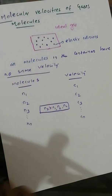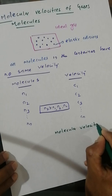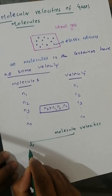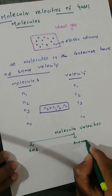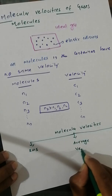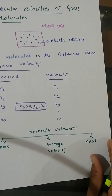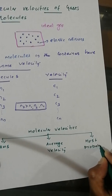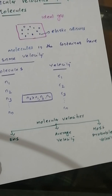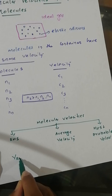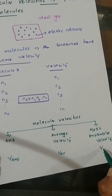Molecular velocities are of three types: first is RMS velocity, represented as V-rms; second is average velocity, represented as V-average; and third is most probable velocity, represented as V most probable.